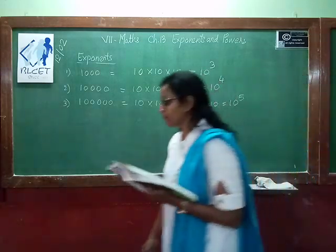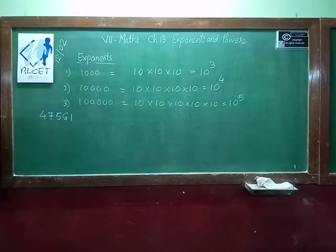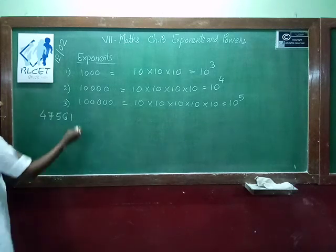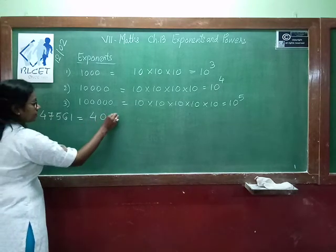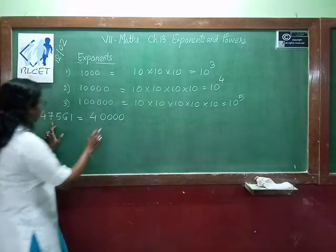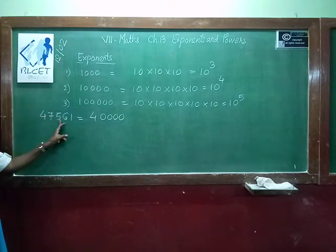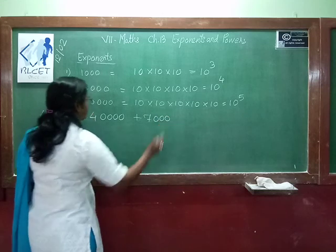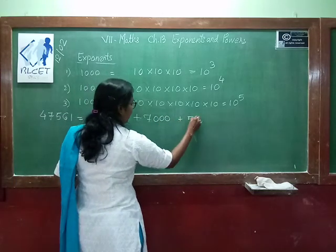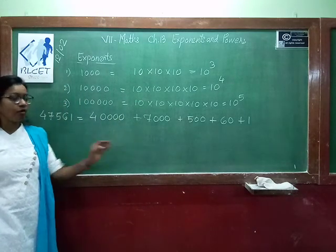Suppose you have the number 47,561. We have to write this in expanded form. First we take 4 and replace the remaining digits with zeros: that gives 40,000. Then: 40,000 plus 7,000 plus 500 plus 60 plus 1. This is the expanded form of the given number.